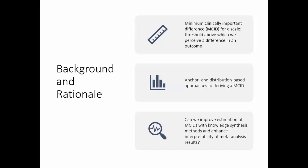So there is an alternative approach: distribution-based approaches, where instead we compare the difference in a scale-based outcome to a pre-specified threshold level of uncertainty for that measure. And so what we're going to try and answer today is: can we improve the estimation of minimum clinically important differences with knowledge synthesis methods that will help make our meta-analysis results more interpretable?